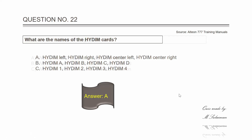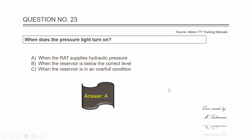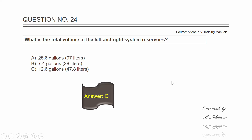Question twenty-three: when does the pressure light turn on? The answer is A — when the RAT supplies hydraulic pressure. Question twenty-four: what is the total volume of the left and right system reservoirs? The answer is C — 12.6 gallons or 47.8 liters.